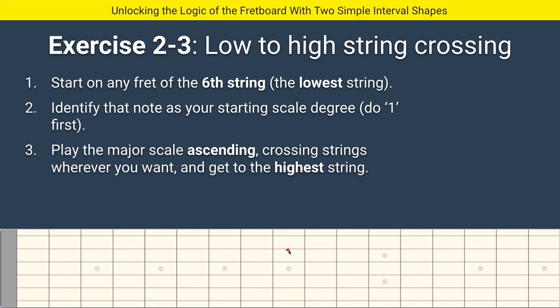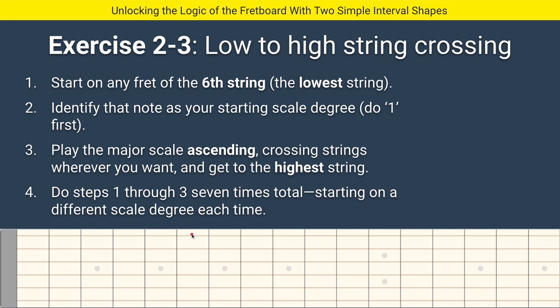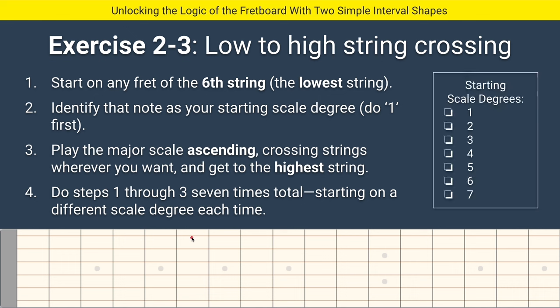Five, six — I'll cross from six to seven, and hey, I made it to the top string. Play anything up here — when you arrive there, you have succeeded. Then you want to do that same game starting on a different scale degree each time. That's what this exercise is.